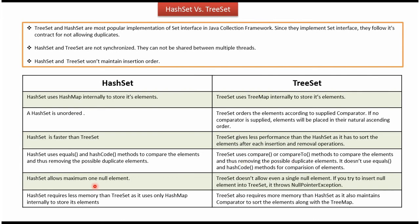HashSet allows a maximum of one null element, but TreeSet doesn't allow null elements. If you try to add a null element to the TreeSet, it will throw a NullPointerException. Additionally, HashSet requires less memory than TreeSet, while TreeSet requires more memory than HashSet.